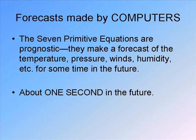Your computer model takes these seven primitive equations and applies them. They're prognostic equations — they forecast what the temperature, pressure, winds, humidity, etc., are going to do at some point in the future. Interestingly, that future point is not very far — it will be about one second, though most models are more like five seconds. It's not very far into the future at all.